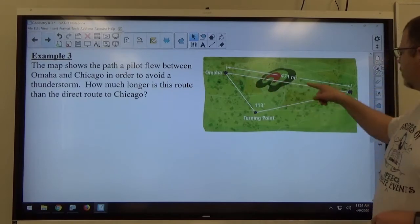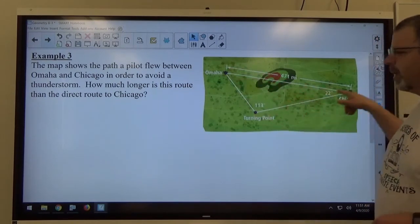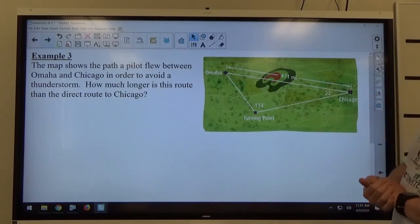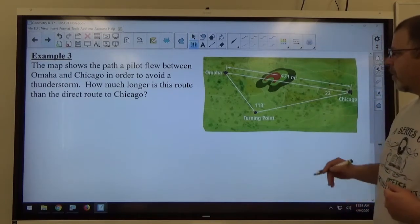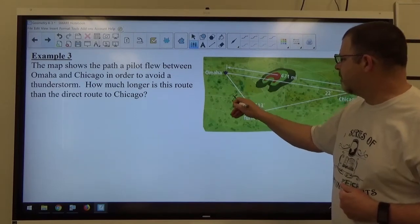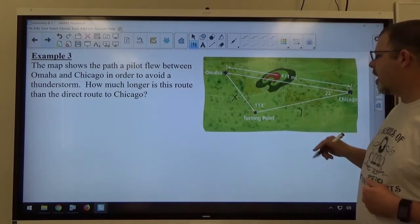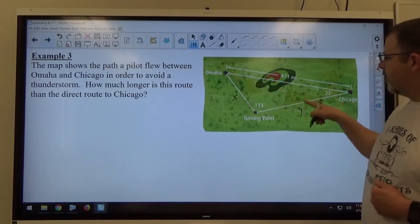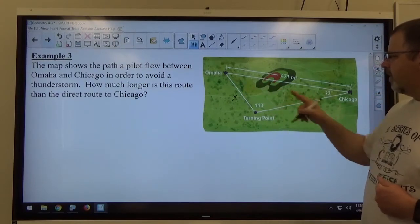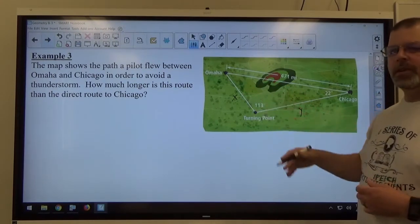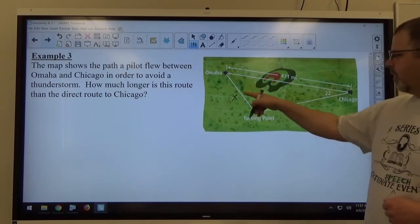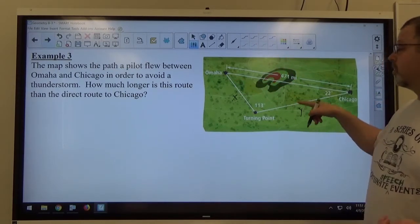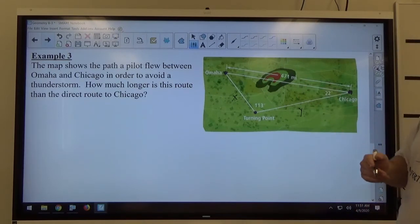But as we can see, the direct route is 471, going this way is going to be longer. So we need to determine how much longer this route is. So if I create a strategy here, I want to find out the length of this piece, we're going to call it X to give it a name, and the length of this piece, Y. If I find out the length of both of these pieces, then the sum of those two pieces represents how far the pilot actually flew. It says how much longer is that route. So we simply take the sum of these two numbers, whatever that is, subtract 471 from it.